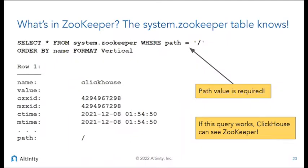So it's a really important tool. Whenever you suspect something is wrong, the first thing you do is dive in and run this query. If it succeeds, at least you know you can see ZooKeeper and you can look for something else. But if this doesn't succeed — if it bombs out or times out — then you know there's something wrong with ZooKeeper.